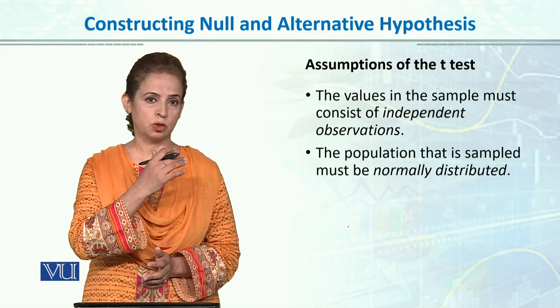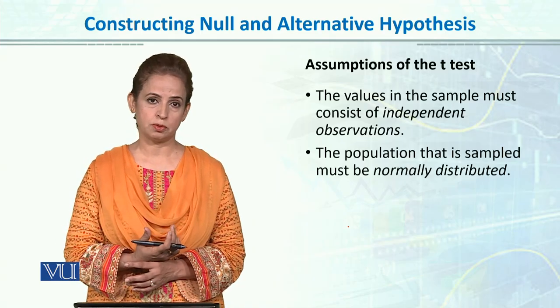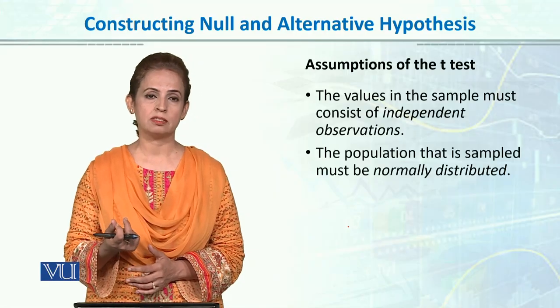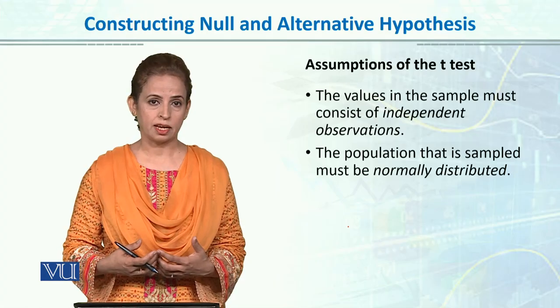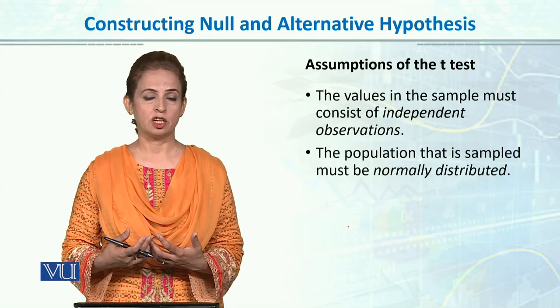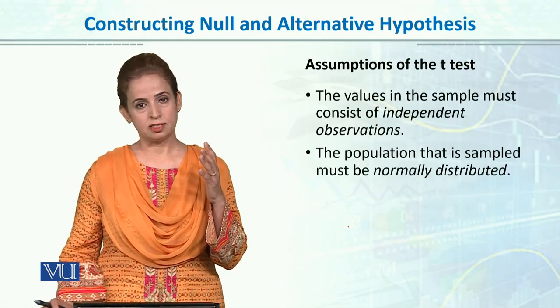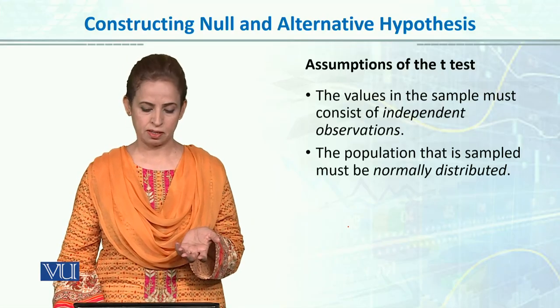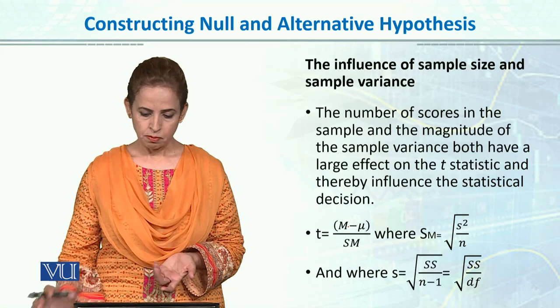Aur usi ko hum estimate karna chaare hoate hain, aur humari assumption hain, ki jo underlying population hain, wo normally distributed hain. Aur dousari humari T ki assumption hain, independence ki, independence ka matlab hain, ki jo bhi humari data mein scores hain, ya observations hain, they are independent, ya ni they are separate people, independent individuals, independent separate people in the sample.